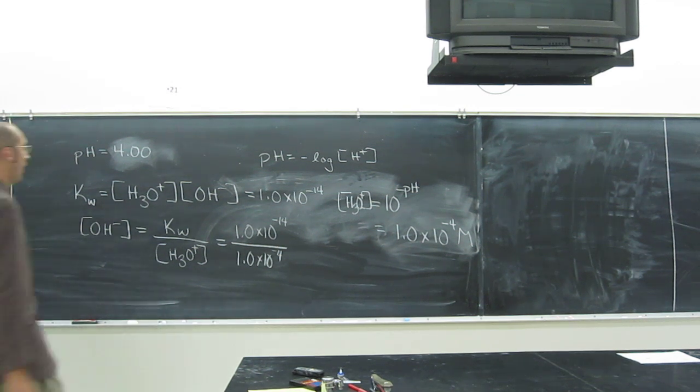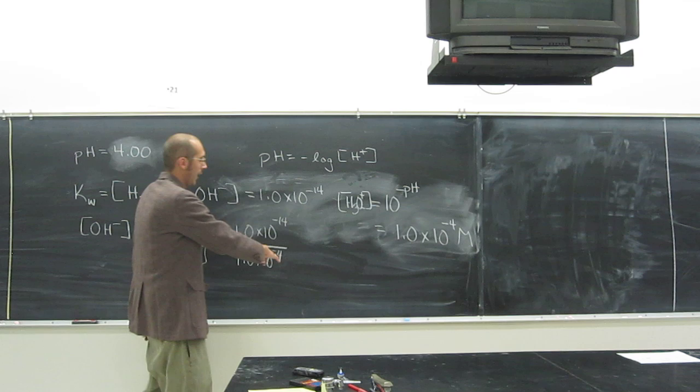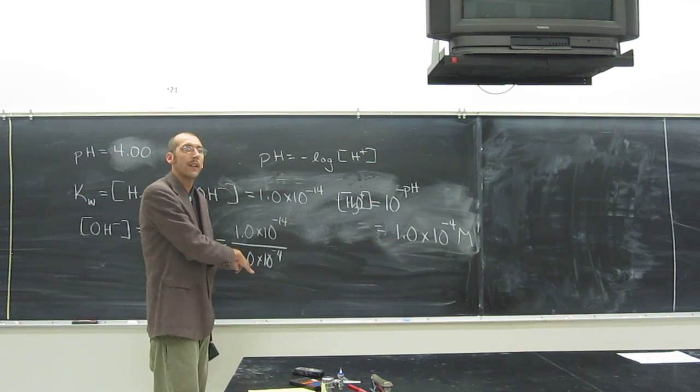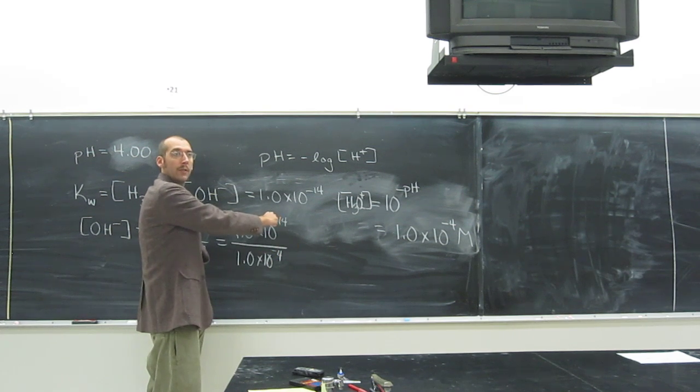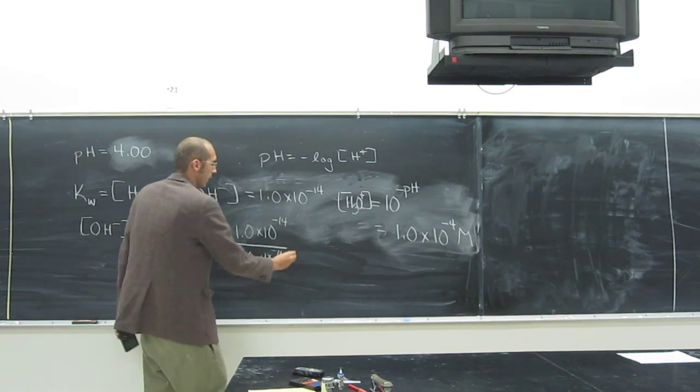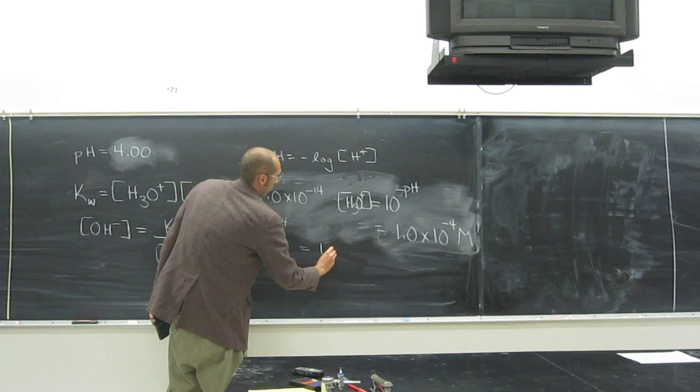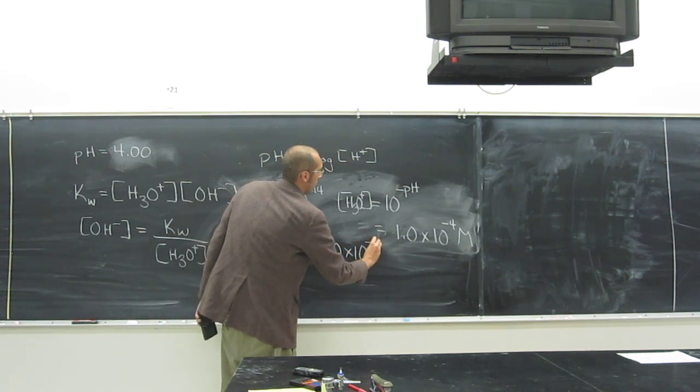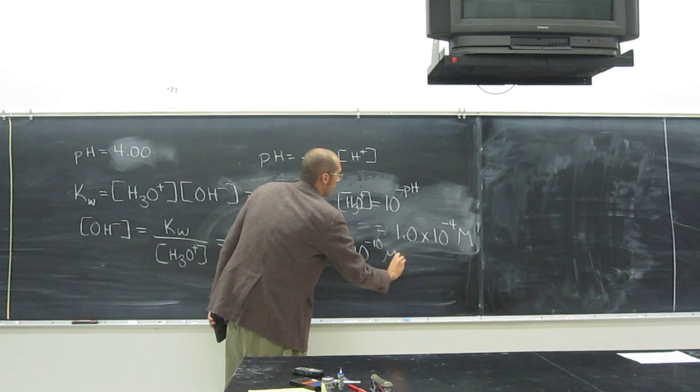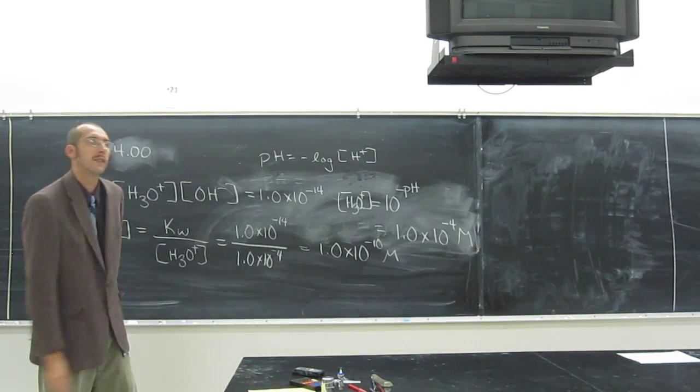So again, you don't have to put these all into your calculator if you remember your log rules, right? So if it's negative on the bottom, you're just going to bring it up to the top and add it. So it's going to be, what did you guys say? 1.0 times 10 to the negative 10 mole. That's it. That's the answer.